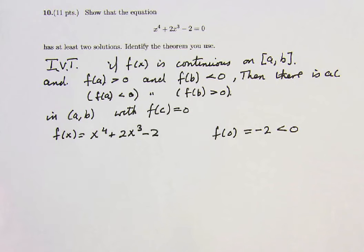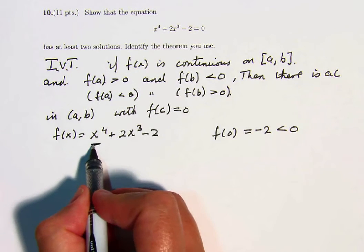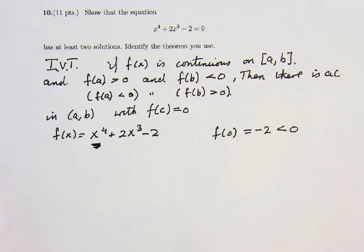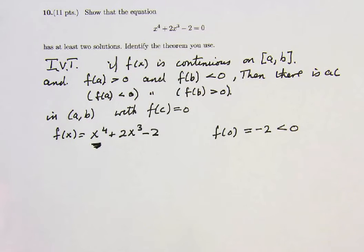Notice also that the leading power here is an even power. It's x to the 4. So as x approaches infinity, certainly this polynomial goes to plus infinity, because this highest power, x to the 4, takes over.